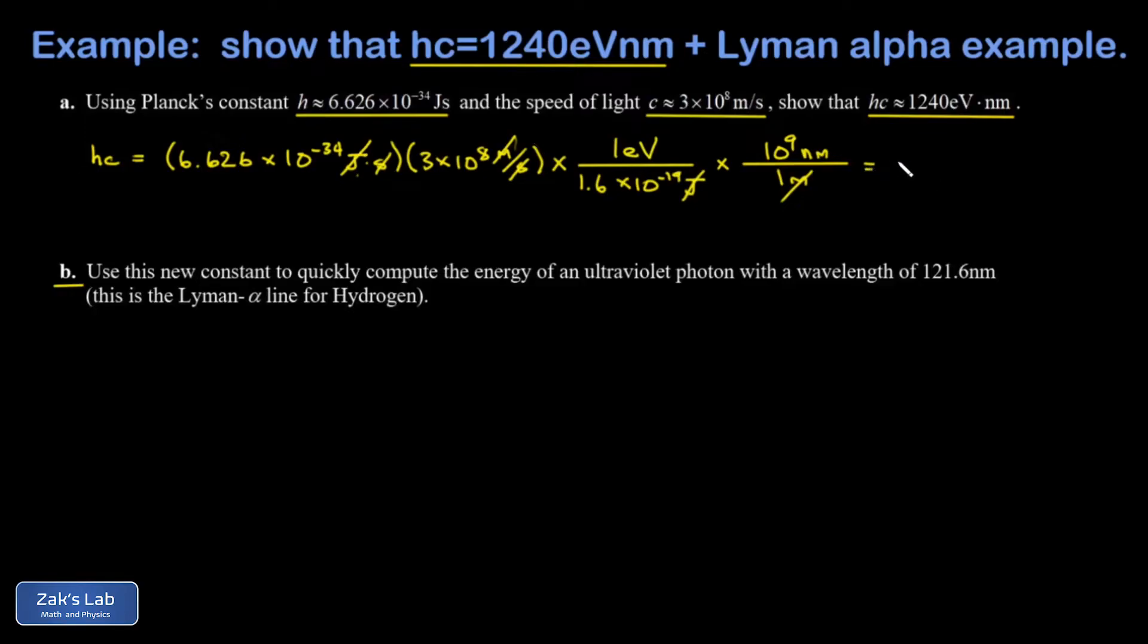And when I crunch the numbers, I get actually 1242 eV nanometers. But in my classes, I typically use the approximation 1240 eV nanometers. Now, the reason this is so useful is because of questions like we have in Part B.